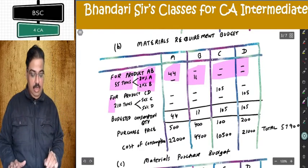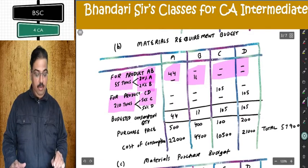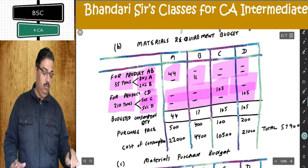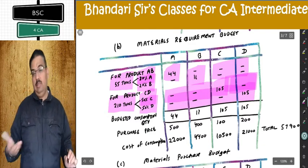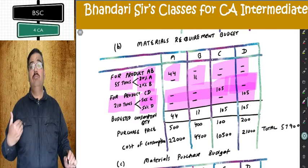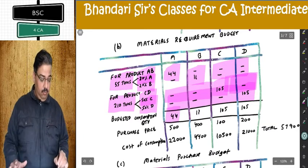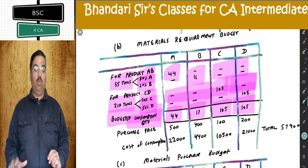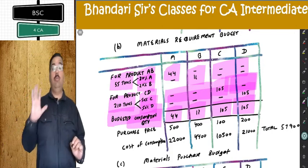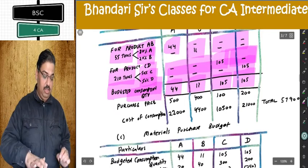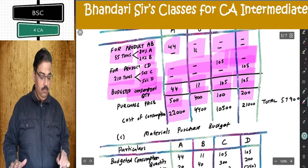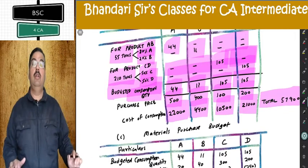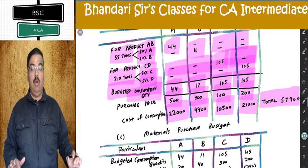Similarly for product C, D — 210 tons total, 50% C and 50% D, so you are getting 105 everywhere. This is the consumption in tons. Add them — single items to be added: 44, 11, 105, 105. That is budgeted consumption quantity. Quantitative requirement budget is over, but I need monetary also, so multiply with the purchase price. Total material requirement comes to 57,900.